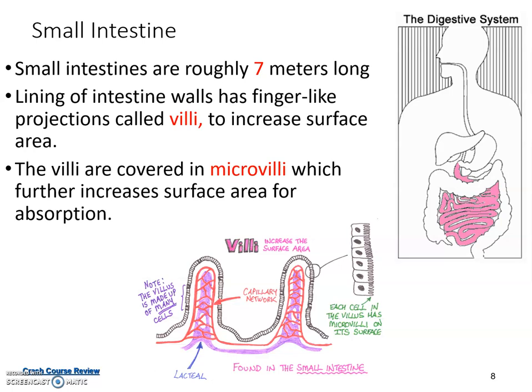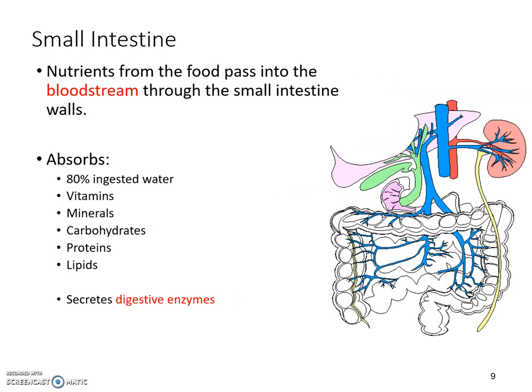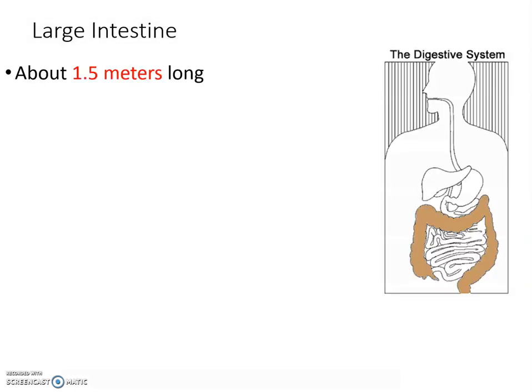After the small intestine takes up most of the nutrients, it absorbs water, vitamins, minerals, carbohydrates, proteins, and lipids. The key takeaway is that it then sends those nutrients to the bloodstream. As mentioned, there's no energy organ — every cell needs nutrients — and blood is what actually delivers the food sugars, nutrients, and vitamins that cells need.